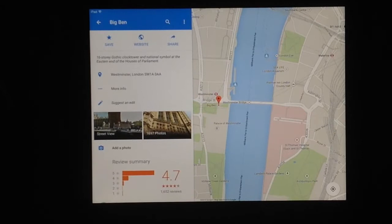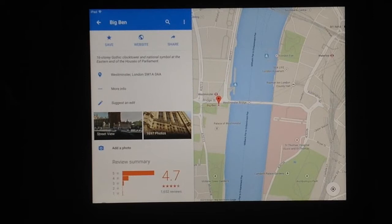It flies to the map of it. So it says Big Ben, it's got some pictures. When we scroll down you can see that Google has collected 1,697 photos as of today.